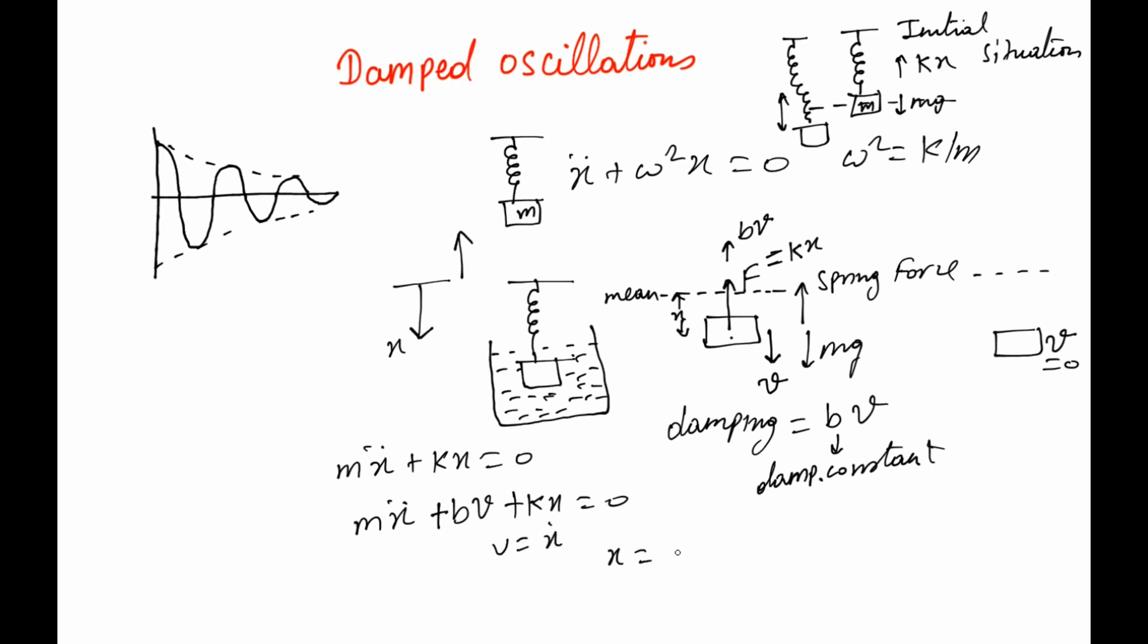x equals A e^(-b/2m)t cos(ωt + φ), and omega is given as √(k/m - (b/2m)²). So this is the solution of this equation.